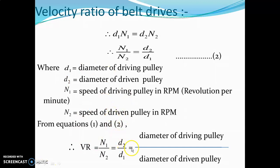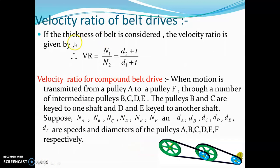The velocity ratio is equal to n₁ upon n₂ is equal to d₂ upon d₁. This is the velocity ratio of the system.